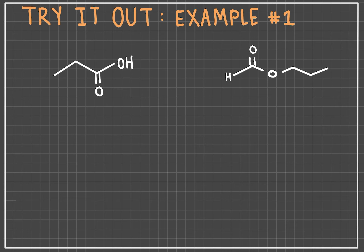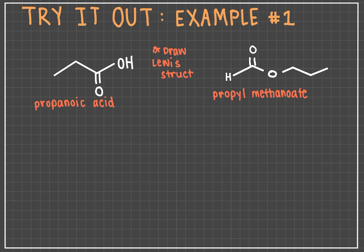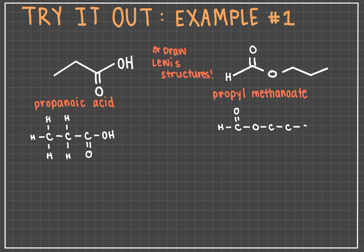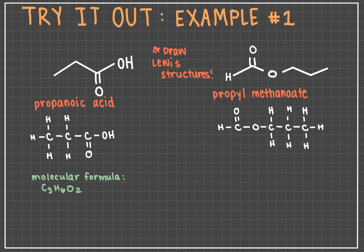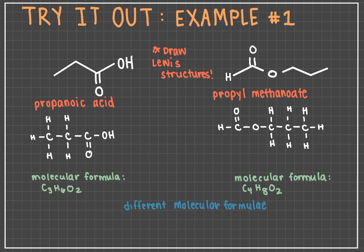In example one, we have propanoic acid versus propyl methanoate. Sometimes it can be helpful to draw the Lewis structure for the molecules, because skeletal structures can be difficult to decipher. If we draw the Lewis structure for propanoic acid, we can see that it has three carbons, six hydrogens, and two oxygens. Doing the same for propyl methanoate, you can count four carbons, eight hydrogens, and two oxygens. Thus, their molecular formulas are different, meaning they cannot be constitutional isomers.